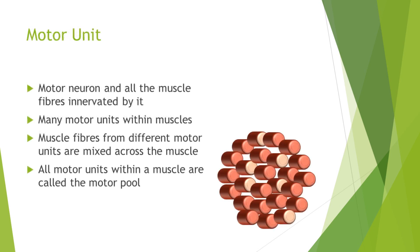Let's first start with the motor unit. The motor unit is the motor neuron and all the muscle fibers innervated by it. Within a muscle there will be many motor units, and all the motor units together within a muscle are called the motor pool. It's important to bear in mind that muscle fibers from different motor units are mixed across the muscle — they're interdigitated; they don't lie in discrete patches.